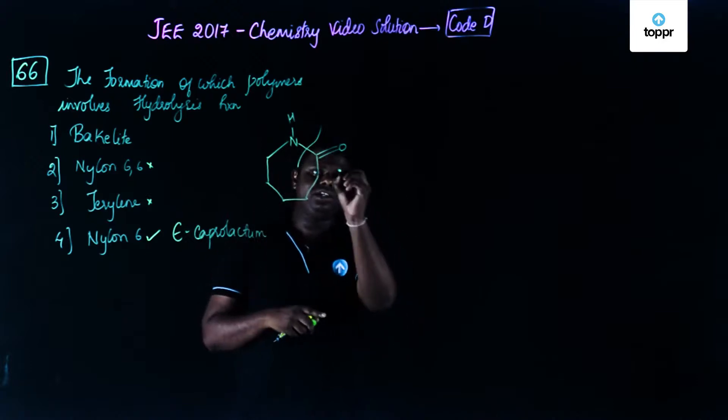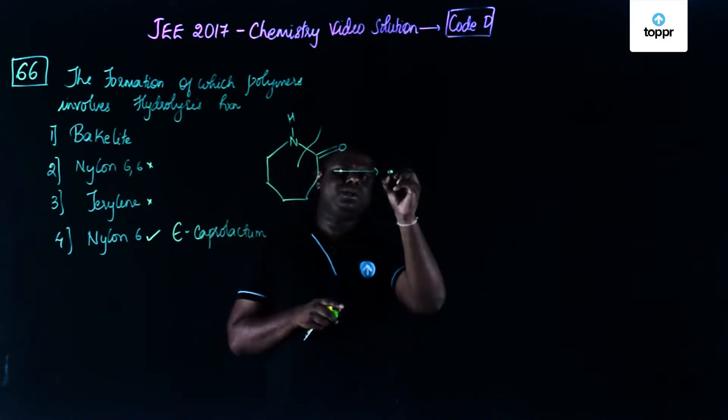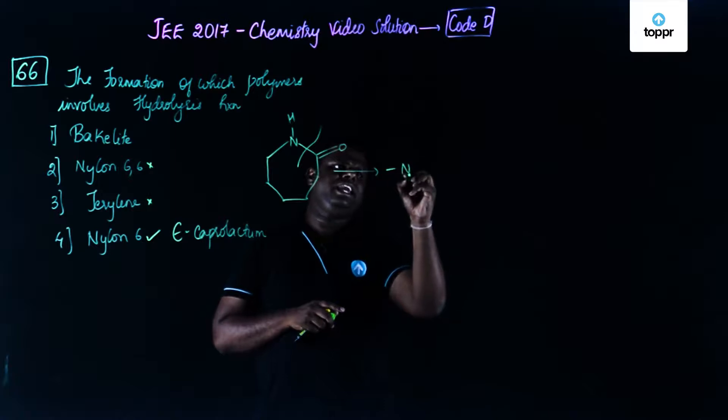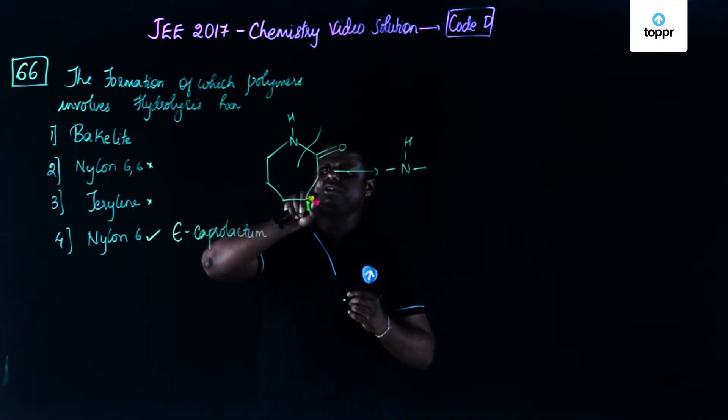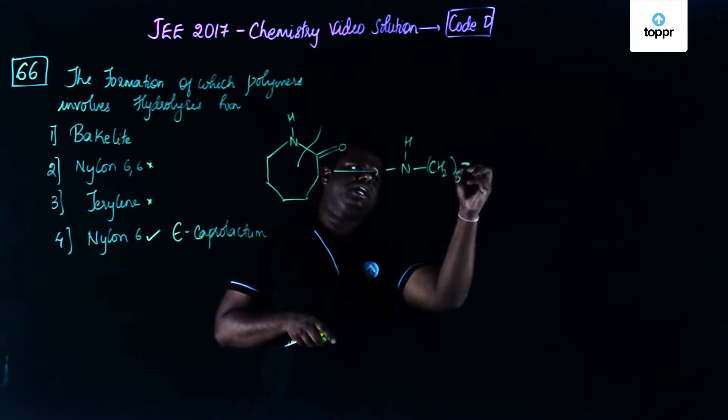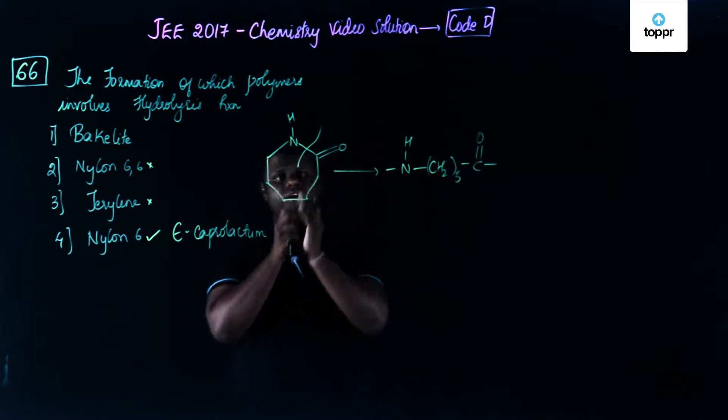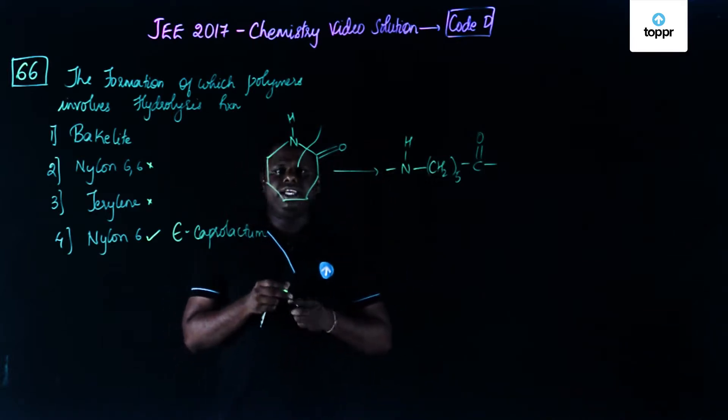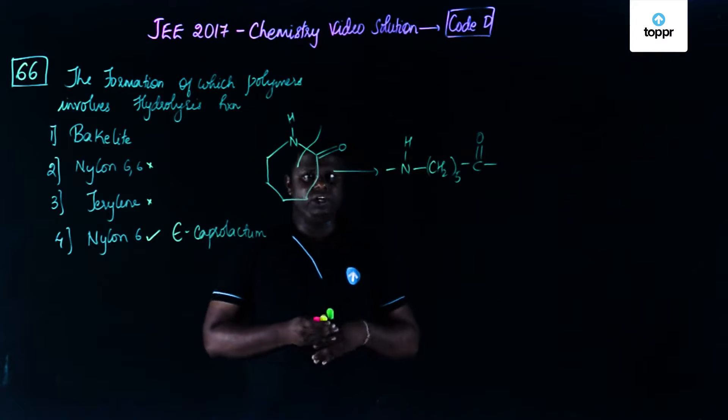So it may undergo hydrolysis to form a nylon 6 polymer. So the polymer could be something like this. You have NH, then you have something like CH2, CH2, CH2, CH2, CH2. So one, two, three, four, five. So I would write this as CH2 five times and then C double bond O. So one possibility could be this could involve a hydrolysis reactions and thereby having some other reactions from which the polymer could be easily obtained.